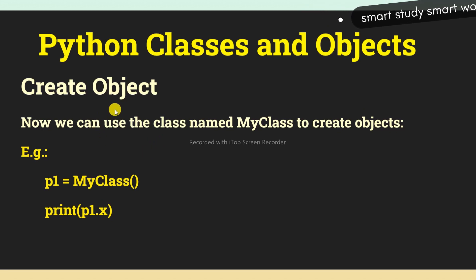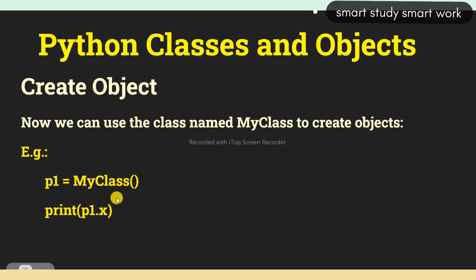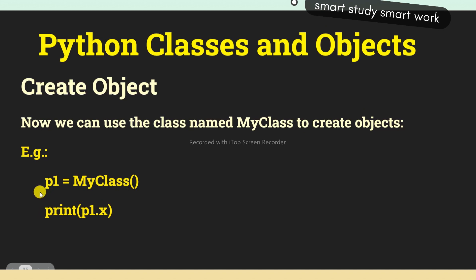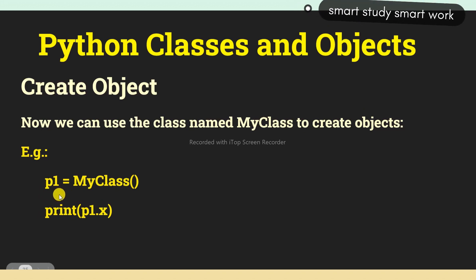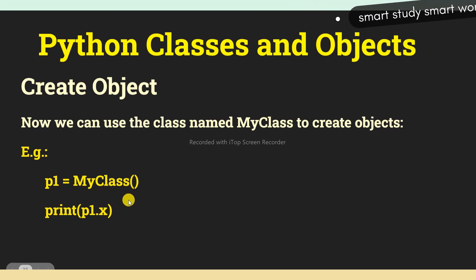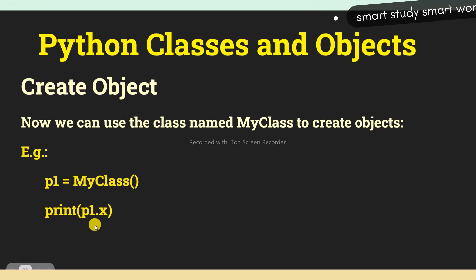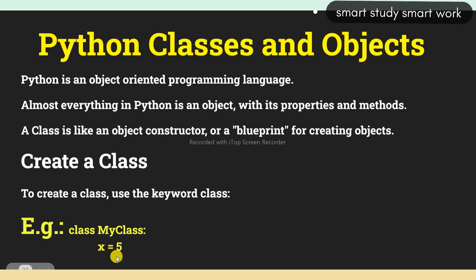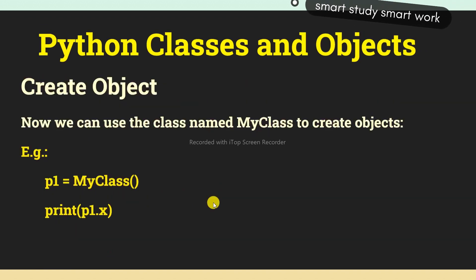Now we are creating the objects. We have already created the class and now we are creating the objects. Our class name is 'MyClass'. How to create the objects? Give the object name — here I have given 'p1' — equal to the class name 'MyClass'. And here I have printed p1.x using the object name.